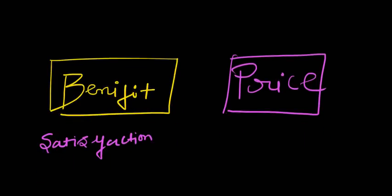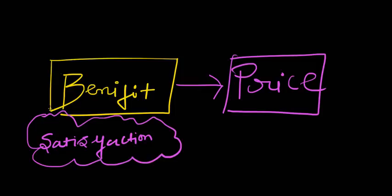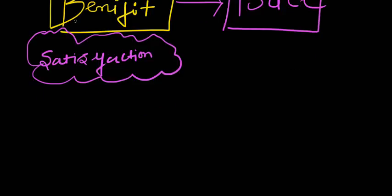As consumers we all look for certain benefits when we go out to purchase, and for that benefit we are required to pay a price. The benefit that we acquire from the price we are paying gives us satisfaction, and that is basically how all the transactions in the world work. How exactly do we go about making a purchase of a particular commodity when it comes to understanding consumer behavior?